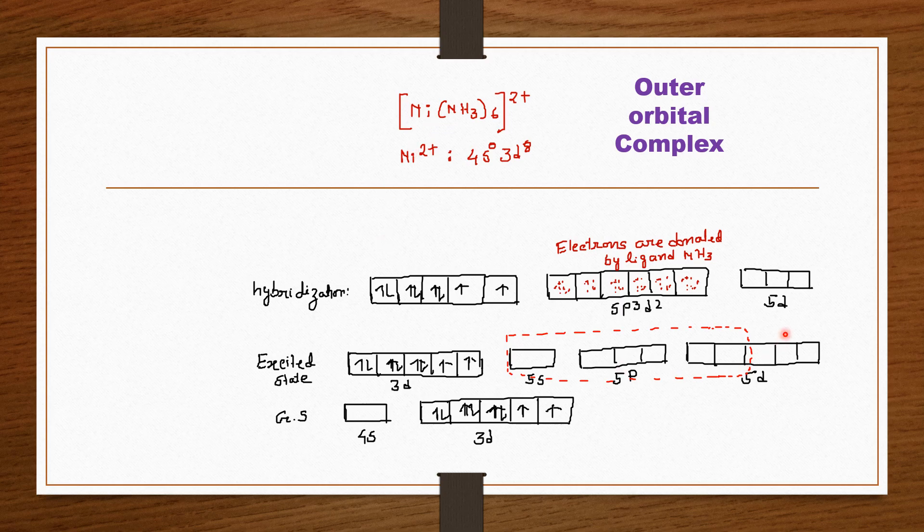This type of bonding pattern or hybridization pattern is called outer orbital complex because here they are using the d orbital which is in the higher quantum number. And this is the main difference between the inner orbital complex and outer orbital complex.